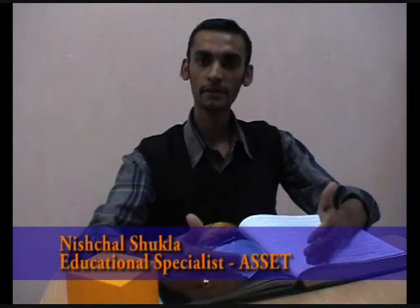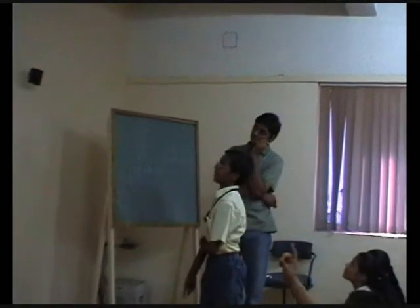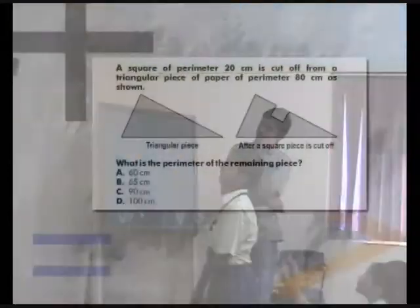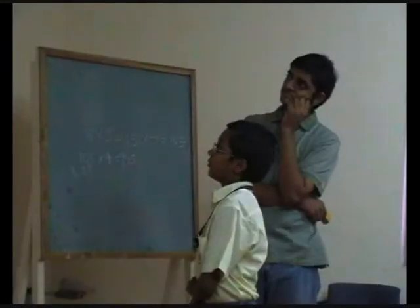Whether they know what perimeter is and whether they are able to compute it properly. A square of perimeter 20 cm is cut from a triangular piece of paper of perimeter 80 cm. What is the perimeter of the remaining shape?